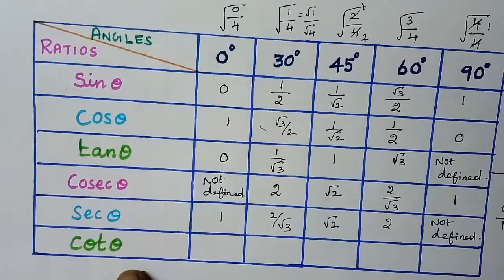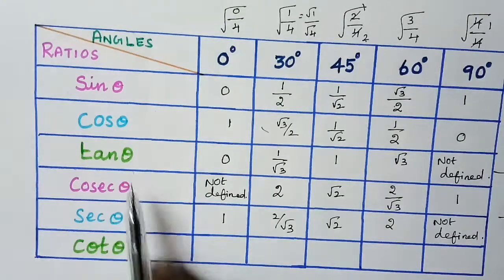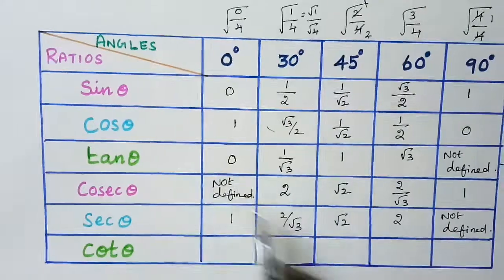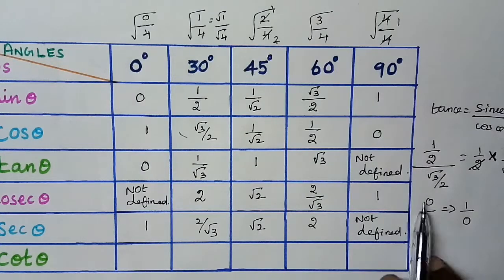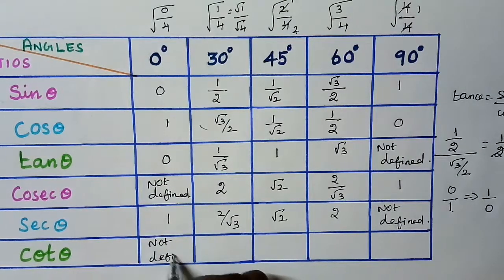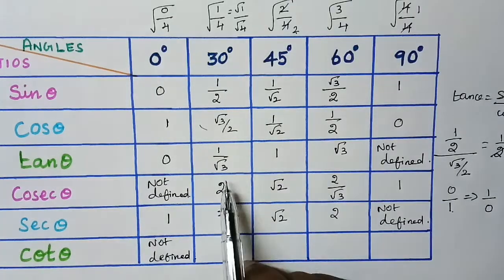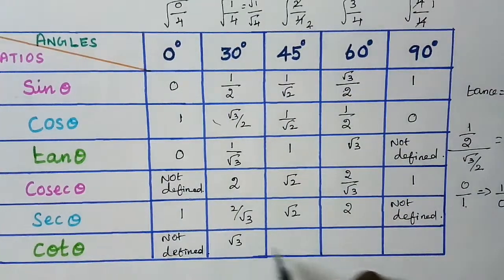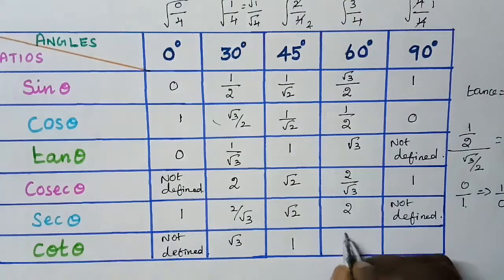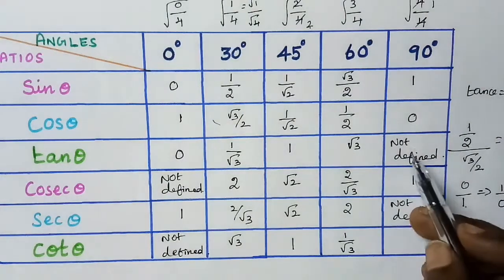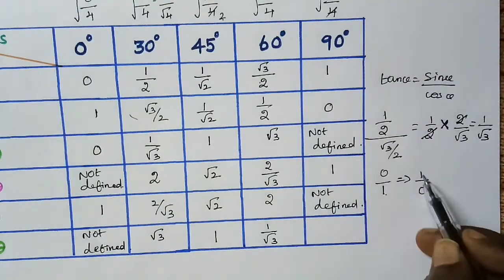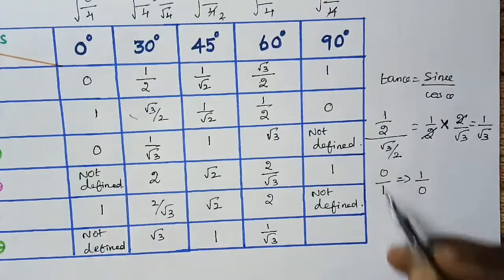Next, cot theta is the reciprocal of tan theta. Reciprocal of 1 by root 3 is root 3 by 1, which is root 3. Reciprocal of 1 is 1. Reciprocal of 1 by root 3... and for 0 degree, tan is 0 so reciprocal of 0 by 1 is 1 by 0, which is not defined. Reciprocal of not defined (1 by 0) is 0 by 1, which is 0.